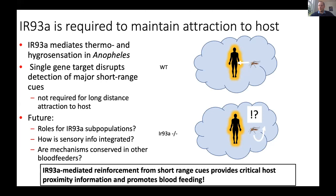Do you have any idea what the tuning receptors might be mediating hygrosensation? If it's anything like Drosophila — and my suspicion is that it probably is — in Drosophila you have IR48-positive neurons responding to dry air and IR68A-positive neurons mediating moist-responsive cells. I would imagine it's those two in mosquitoes as well. We have driver lines we're testing now to try to assess the individual impact of those cell populations.